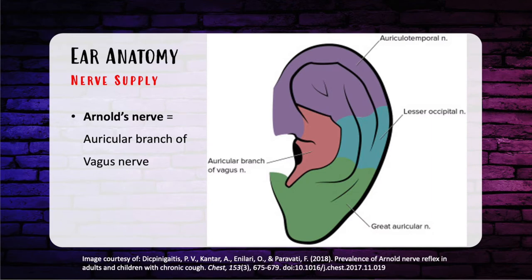There are four nerves to think about regarding innervation of the ear. The first is the greater auricular nerve, which supplies the lower lateral and inferior surface of the ear. Moving on up, it's the auriculotemporal nerve, supplying sensation to the anterior and cranial surface of the ear, the crus of the helix, and the tragus. Next is the lesser occipital nerve, providing sensation to the superior cranial surface. And lastly, Arnold's nerve — the auricular branch of the vagus nerve — provides sensation to the concha and the area surrounding the external auditory canal.